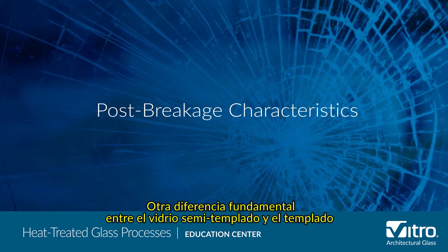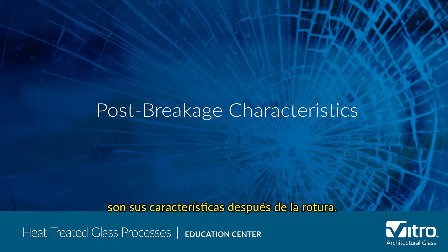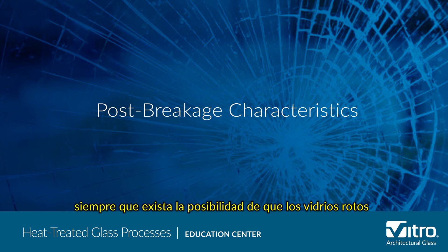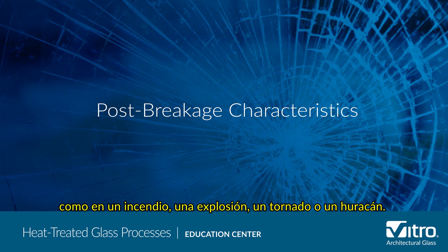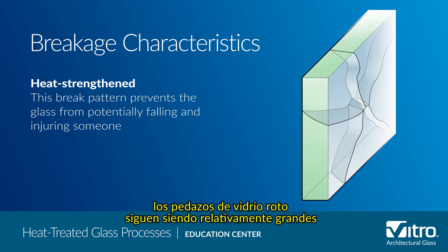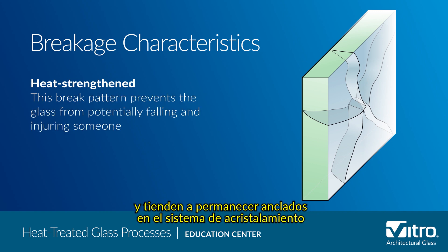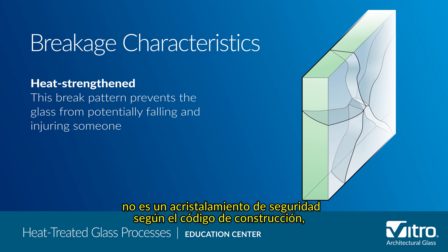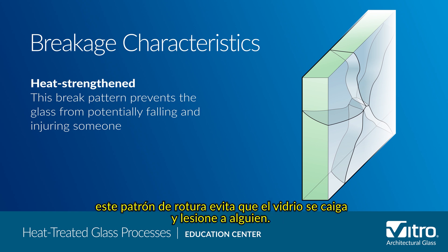Another critical difference between heat strengthened and tempered glass is their post-breakage characteristics. Safety glazings are typically specified to provide security or to keep occupants safe whenever there is a potential for broken glass to hurt people if it becomes a projectile — as in a fire, explosion, tornado, or hurricane. With heat strengthened glass, pieces of broken glass remain relatively large and tend to stay anchored into the glazing system until they are removed. Although heat strengthened glass is not a safety glazing by building code, this breakage pattern prevents the glass from falling and injuring someone.